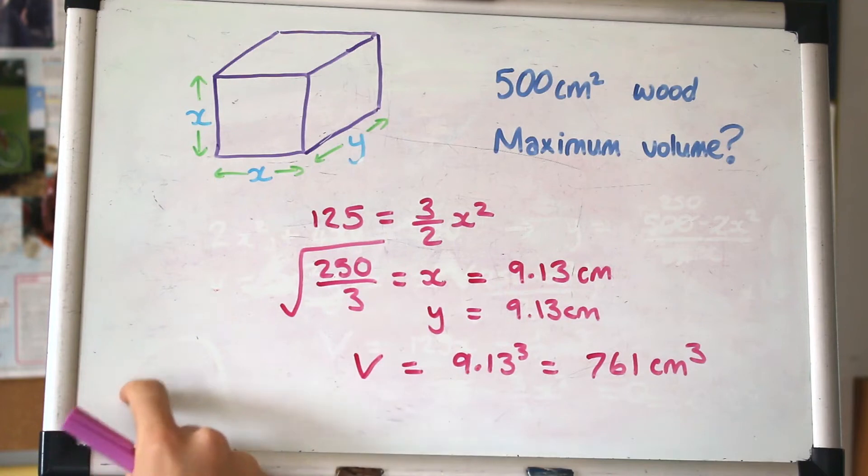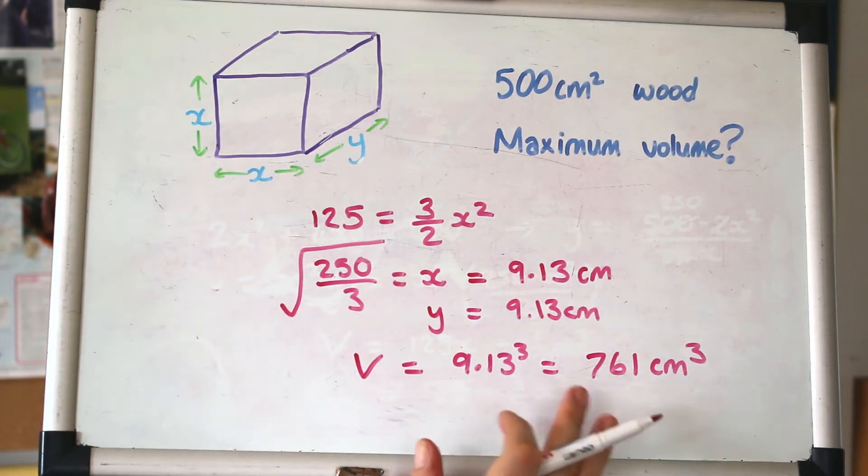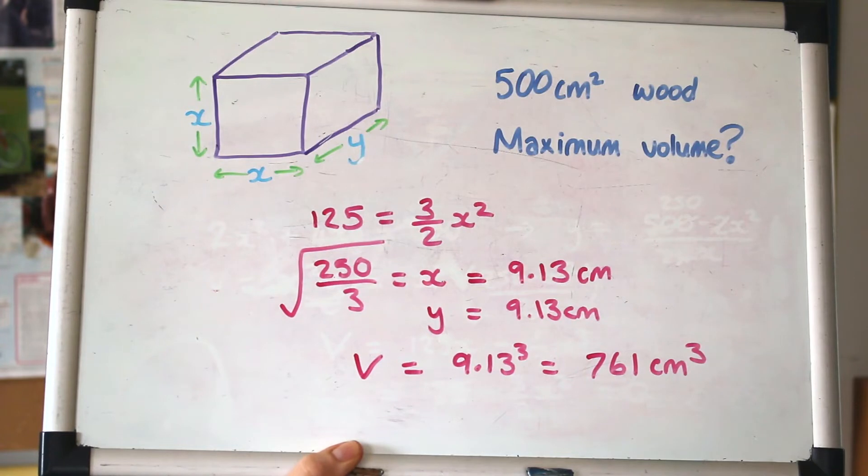I mentioned earlier that we knew what the graph looked like because it was a negative quadratic, so it was an upside-down parabola, so we knew it's a maximum. That's a good argument. But not always will you have a function that you know what the graph looks like. There's another way to prove this is a maximum and not a minimum.